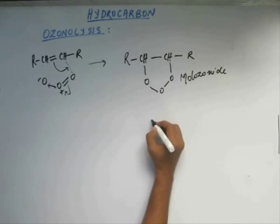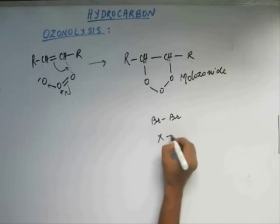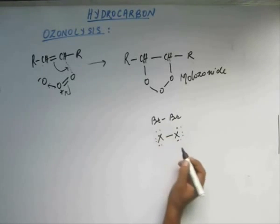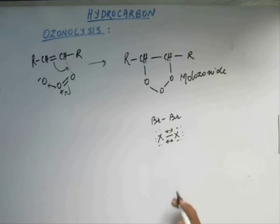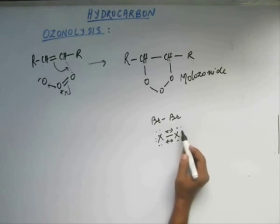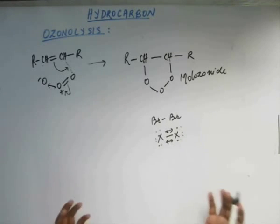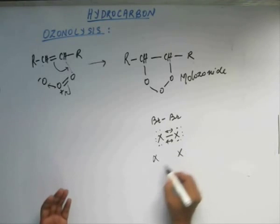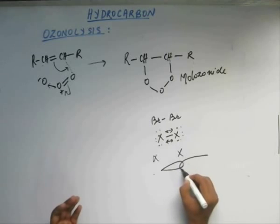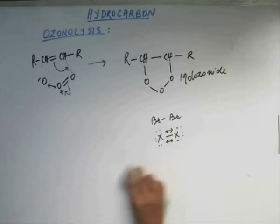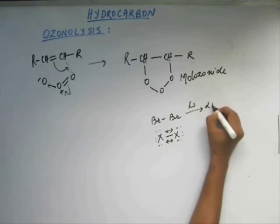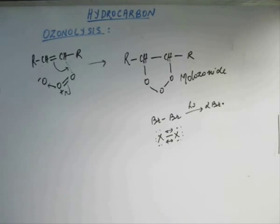As I told you before — remember when I taught you photohalogenation — if you have X–X, any halogen, each halogen will have three lone pairs. There will be repulsion between those six lone pairs. Because of that repulsion, this halogen will try to minimize the repulsion and move far apart. In that process, the overlapping of the orbitals will also decrease, making the bond weak. So applying a little heat or light, they break, giving 2X·.